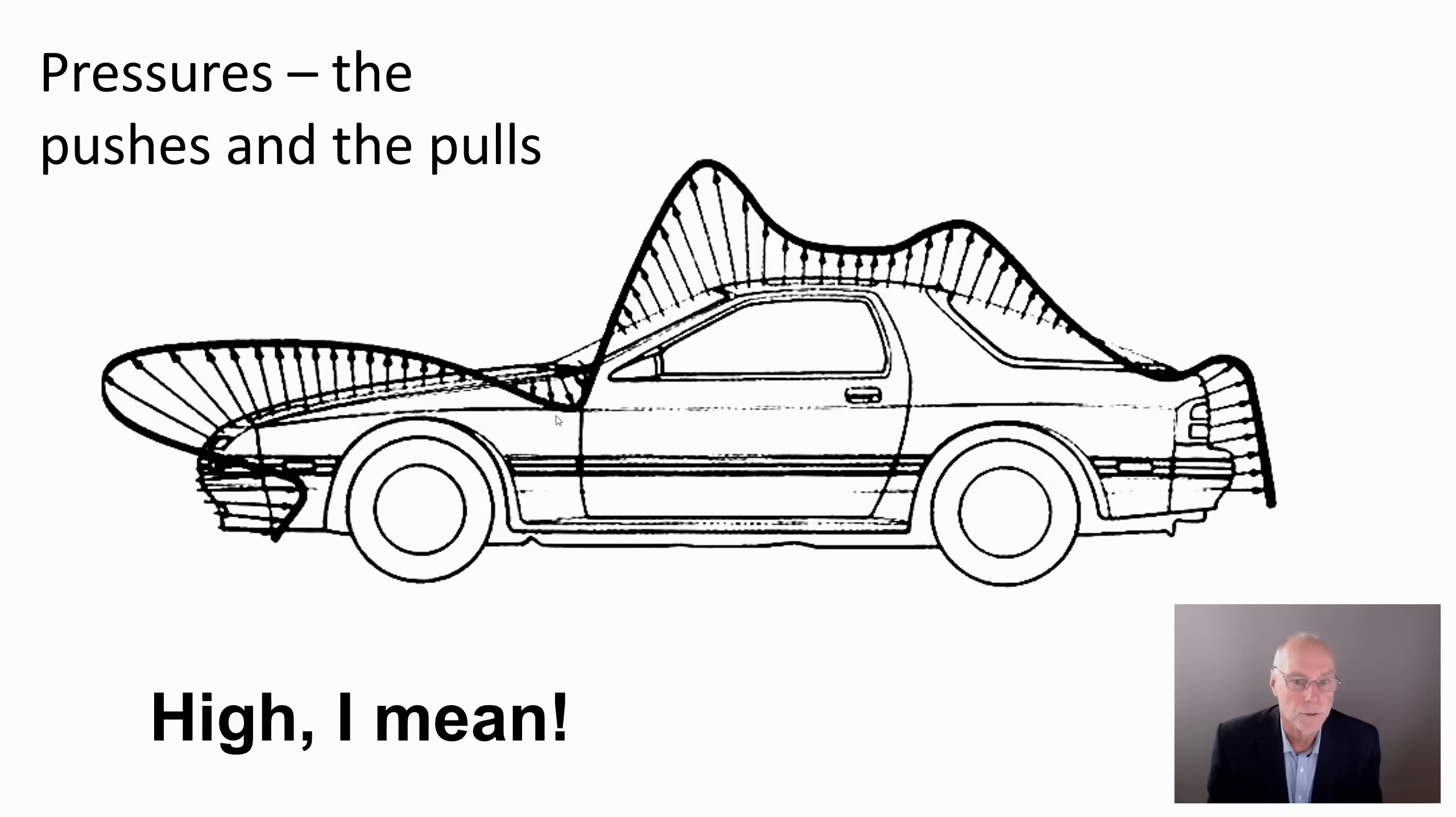So the airflow wrapping around the top of the windscreen, low pressure. The airflow wrapping around this curve here, low pressure as well. So the shape of the car gives us a very good indication of whether they're going to be low pressures or high pressures, assuming that the airflow is attached to that surface, is actually following that surface.